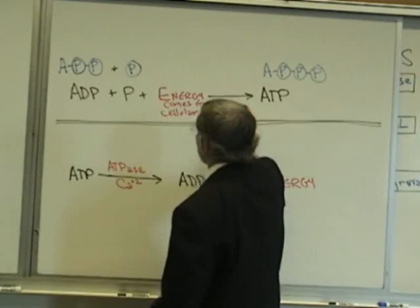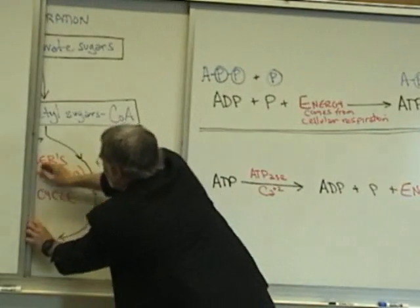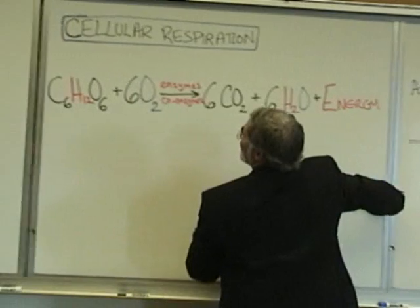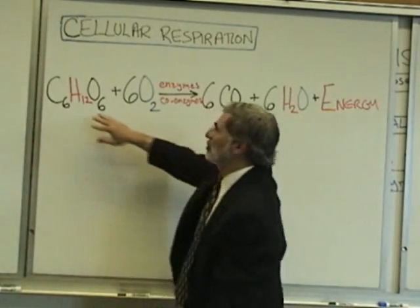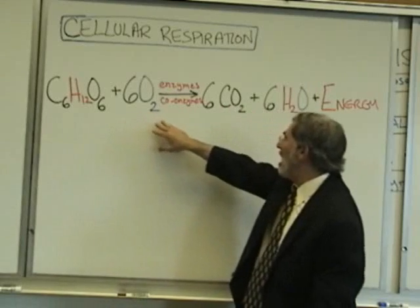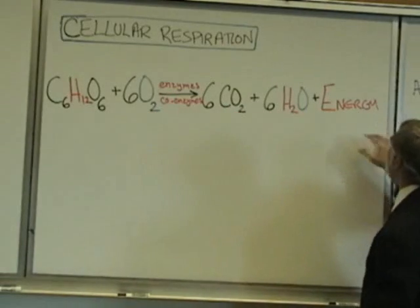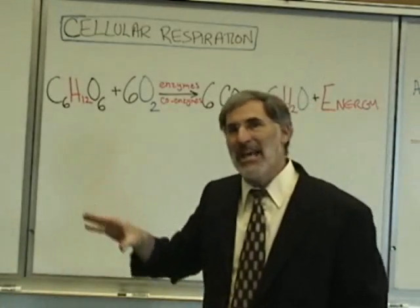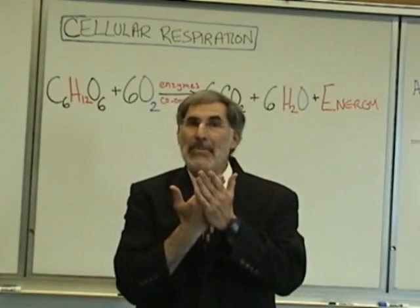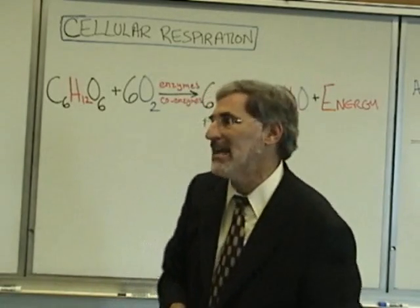What is cellular respiration? Cellular respiration is the process by which sugars and other foods are broken apart with oxygen into carbon dioxide and water in order to release energy. That energy is then used to join phosphates onto ADP and form these high energy nucleotides called ATP.